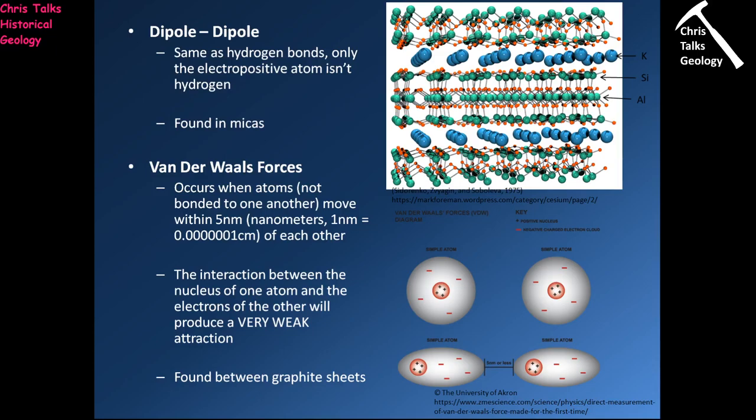In graphite, each sheet consists of carbon atoms held together by covalent bonds, making it a very strong layer. However, because all the carbons in the sheet have exchanged electrons, there are no electrons to exchange between layers. This means each layer is only very weakly attracted to the layers above and below, and that attraction is due to Van der Waals forces.